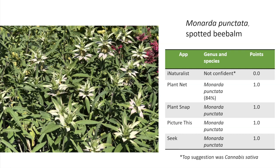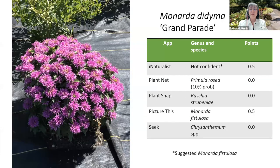Four of the five apps did very well on spotted bee balm, it being so very distinctive. However, iNaturalist was out in left field — it thought it was Cannabis sativa, so it thought it was marijuana.